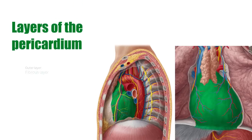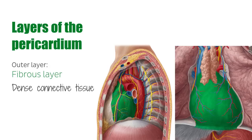The outer layer of the pericardium is known as the fibrous layer, and consists of dense connective tissue. It is attached to the central tendon of the diaphragm via the pericardiacophrenic ligament, whose fibers merge with the tunica adventitia of the vessels which enter and exit the heart.